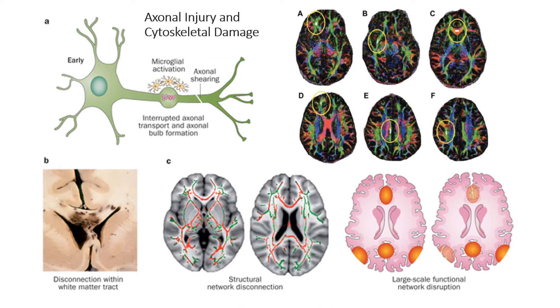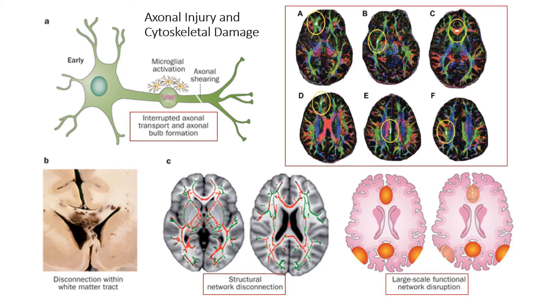Microtubule disruption due to axonal stretch can interfere with bidirectional axonal transport, potentially isolating a synapse, diminishing normal neurotransmission, and in severe cases, resulting in axonal disconnection.